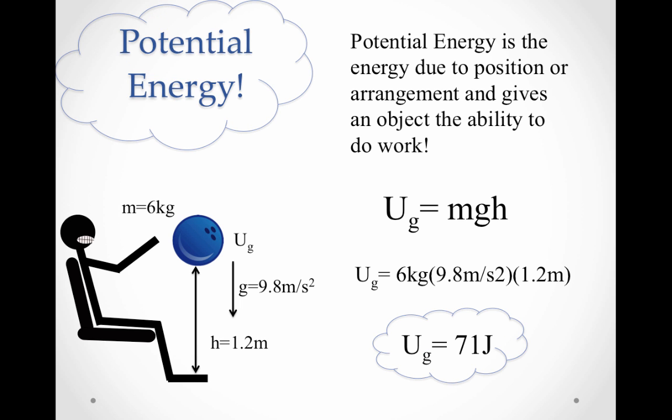So let's continue on with potential energy and further define it. Notice that when we lifted the bowling ball above Dan's foot, we rearranged its position. And we rearranged that position in a gravitational field. So our definition for potential energy is the energy due to position or arrangement and gives an object the ability to do work. So in this example, the bowling ball when it was on Dan's foot couldn't really do anything, couldn't fall any farther. But now we've rearranged its position in this gravitational field. So if we do let it go, gravity can do work on the bowling ball to accelerate it and cause harm to Dan's foot.